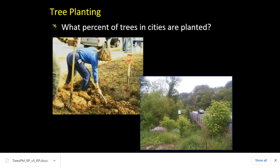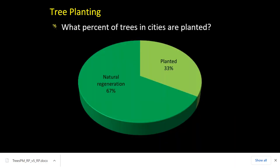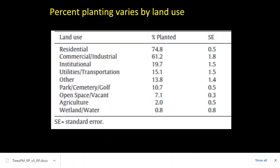A surprising fact: only about one in three trees in cities are actually planted. In drier regions like Los Angeles, nine out of ten trees are planted because forests don't regenerate naturally there, but in the heavily forested Southeast and Northeast, most urban forest comes from natural regeneration. Planting varies by land use — in residential areas, three out of four trees are planted, while in open space, fewer than one in ten are planted.